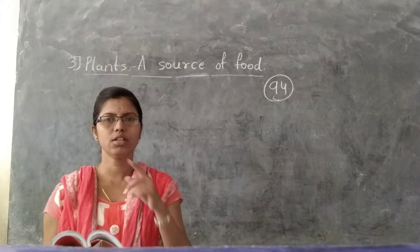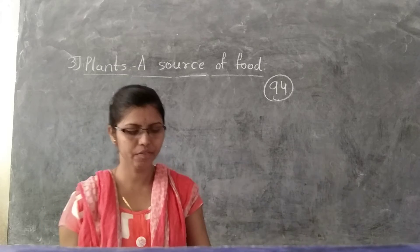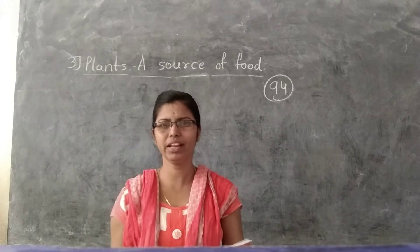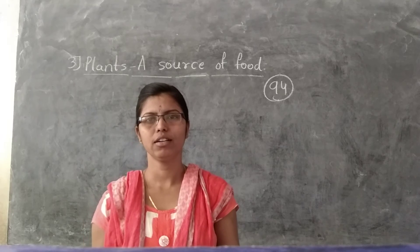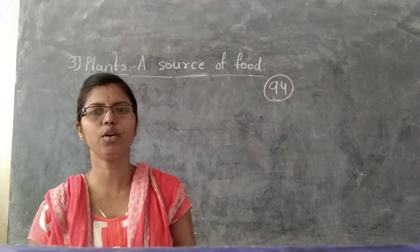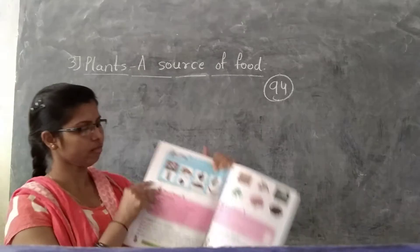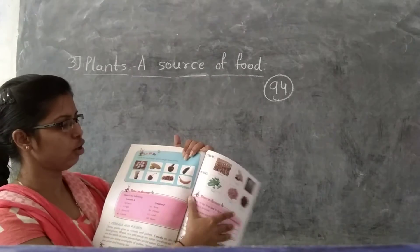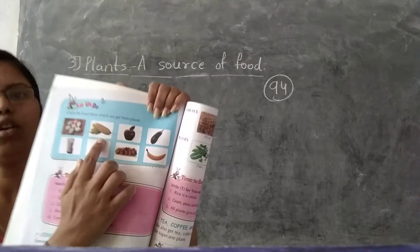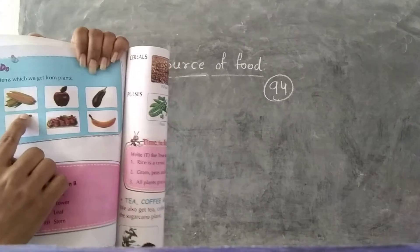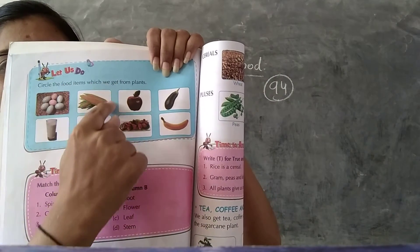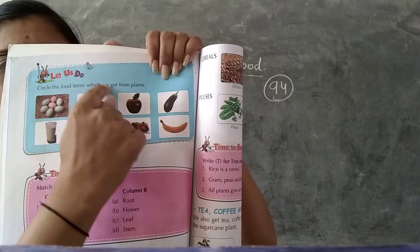You should circle the items we get from plants. The first word is egg. Do we get egg from a plant? No. So egg is not circled. The second word is corn — sweet corn. So circle the corn.